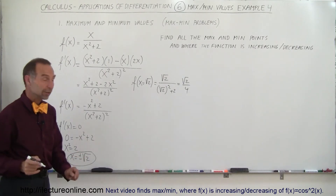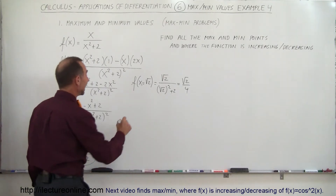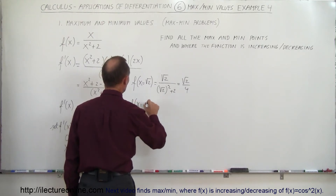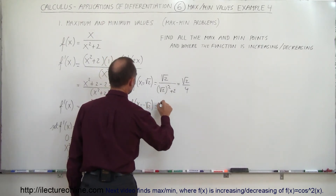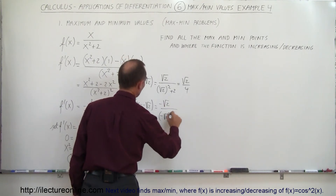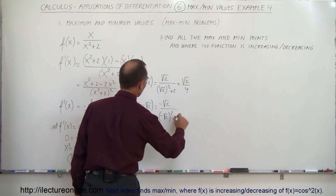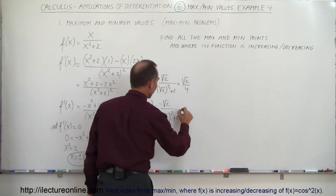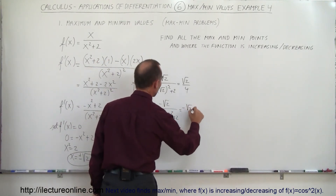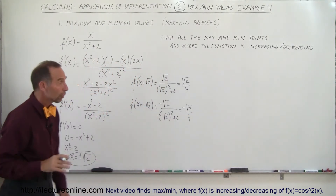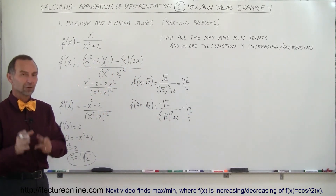Plugging in the other possible value, which is the negative square root of 2: f of negative square root of 2 equals negative square root of 2 divided by negative square root of 2 quantity squared plus 2. We get the exact same value except with a negative on top, so minus square root of 2 over 4. Now we have the two points where the slope will be 0.